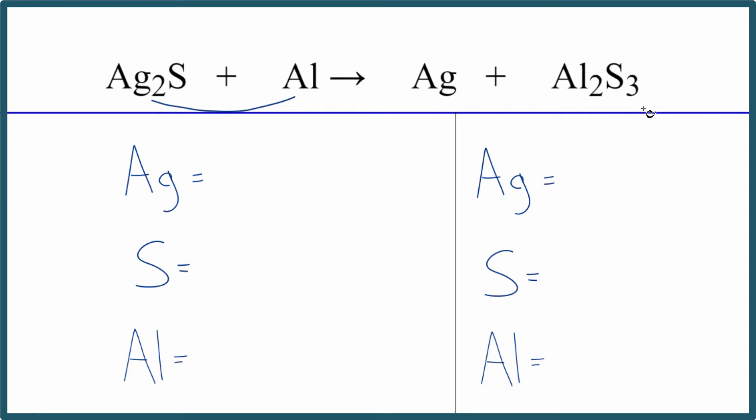But let's balance the equation here. We have two silver atoms, one sulfur, and one aluminum. On the product side, we have one silver, three sulfurs, and two aluminums.